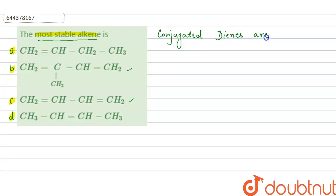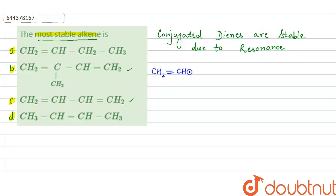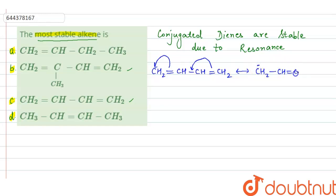Conjugated dienes are stable and the reason behind this is resonance — they are stable due to resonance. For example, let us take the alkene CH2=CH-CH=CH2. When the pi electrons are transferred, this bond breaks and we get the structure CH2⁻-CH=CH-CH2, showing that resonance can take place.